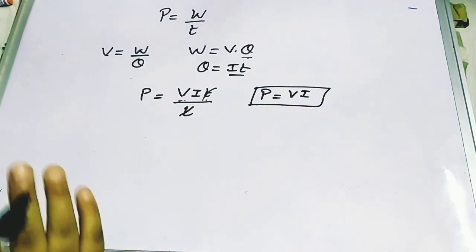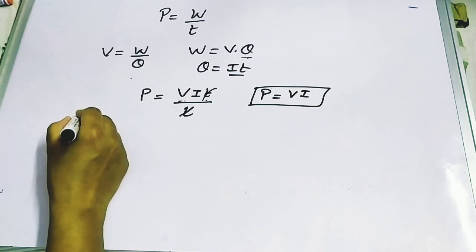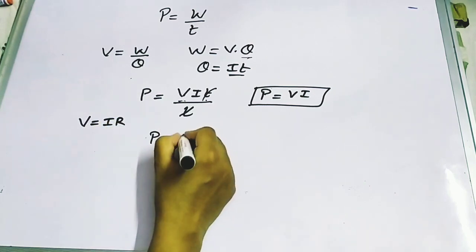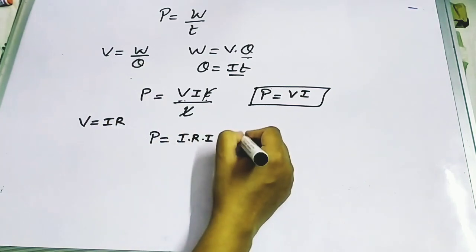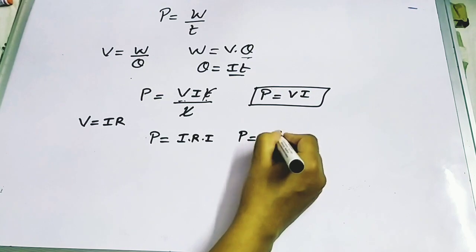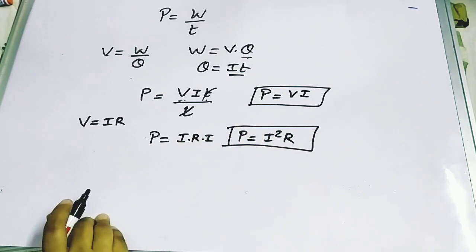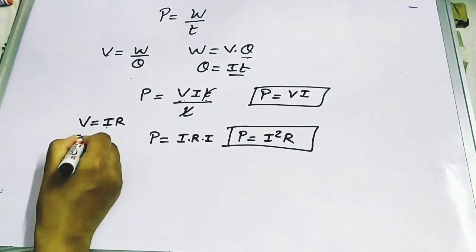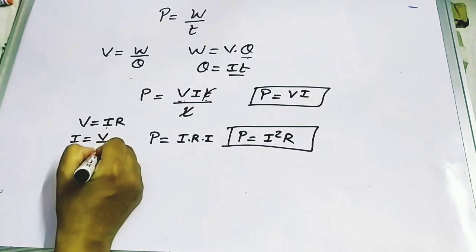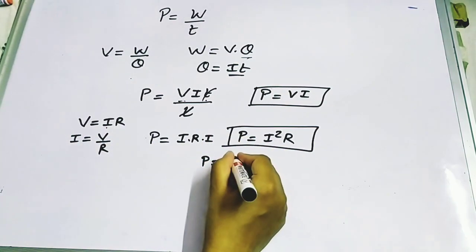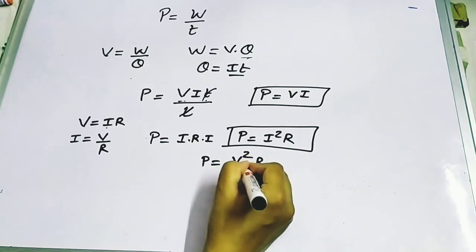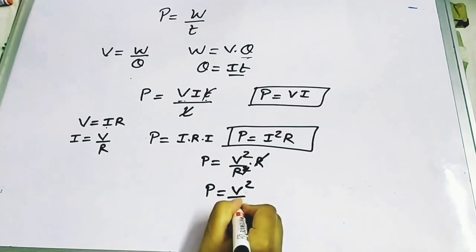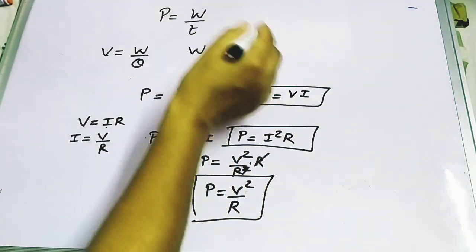Using Ohm's law, V = IR, we can substitute into P = VI to get P = IR × I = I²R. This is the second formula for power. For the third formula, since I = V/R, substituting gives P = V × (V/R) = V²/R. So the three formulas for electric power are: P = VI, P = I²R, and P = V²/R.